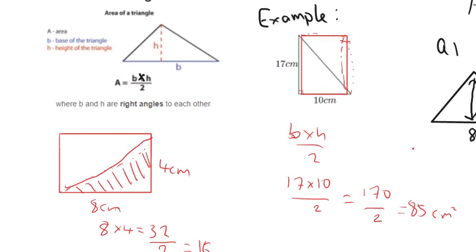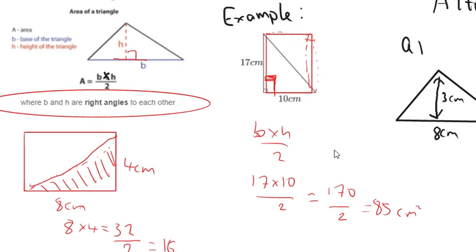It also says here where B and H are right angles to each other. So where the base and the height are at right angles to each other. That's important. The base and the height must make a right angle with each other in order for the formula to work. So here it is 17 centimetres up the side and 10 centimetres across the bottom. They are at right angles to each other.